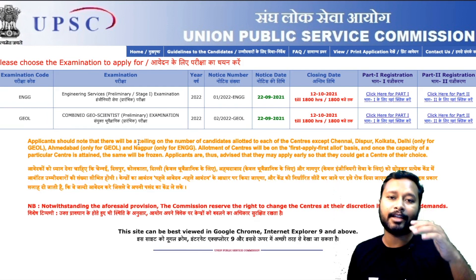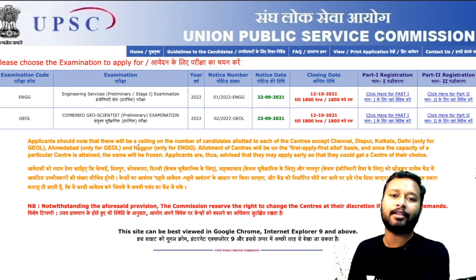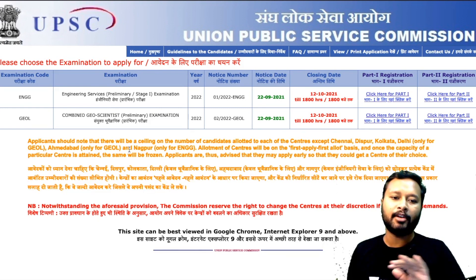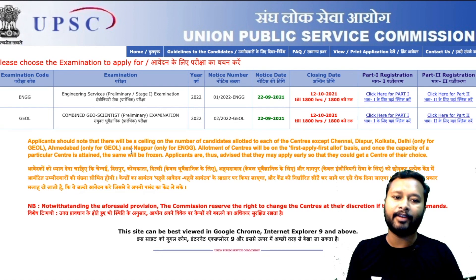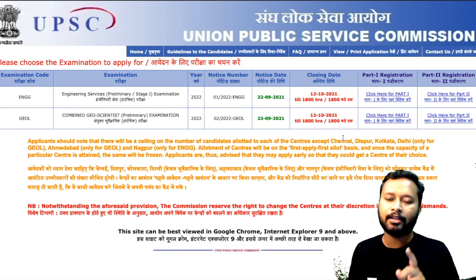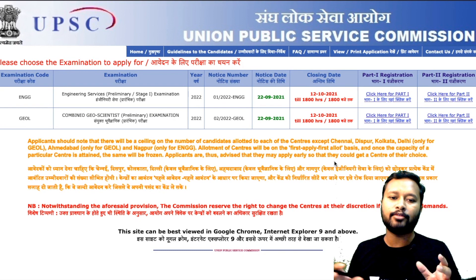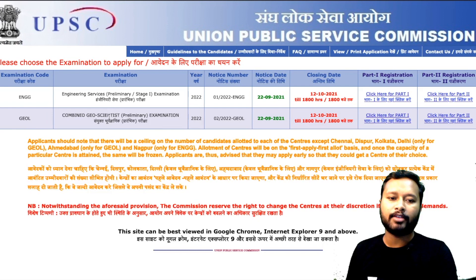If you are willing to fill this form, make sure you fill it as early as possible, because if you delay, it might happen that the center near your city gets filled. There will be three choices asked — if your first choice is filled, you will be redirected to your second choice. The ceiling does not apply in Chennai, Dispur, Kolkata, and Delhi — those four cities are exempted, so there is no limit of candidates in those cities.